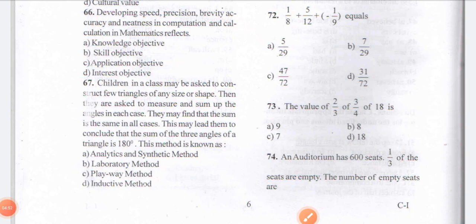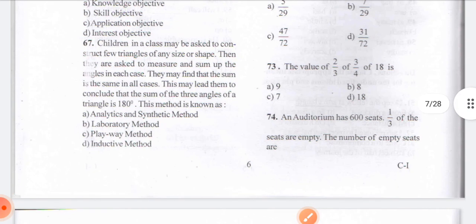Coming to question number 67: children in a class may be asked to construct a few triangles of any shape or size, then they are asked to measure and sum up the angles in each case. They may find that the sum is the same in all triangles. This may lead to the conclusion that the sum of all three angles of a triangle is 180 degrees.